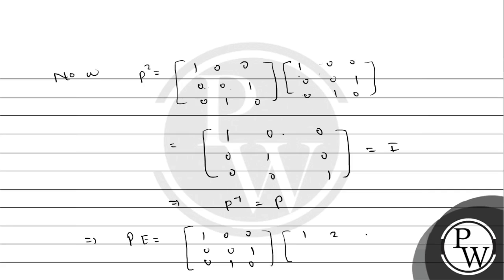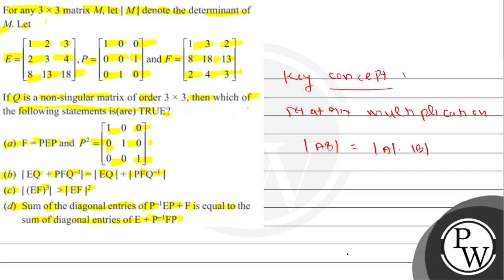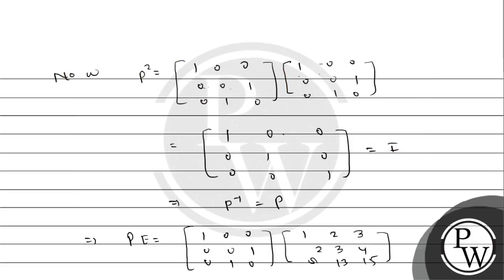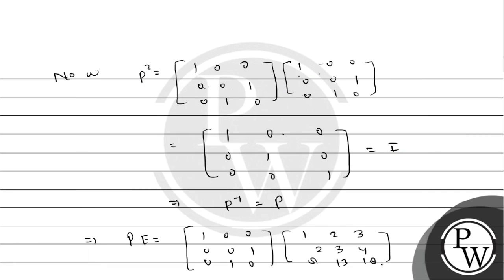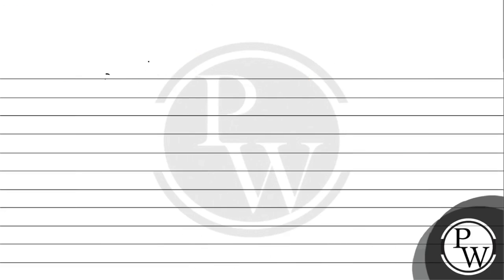The PE matrix multiplied gives entries: first row 1, 2, 3; second row 8, 13, 18; third row 2, 3, 4. We observe this result. Now we multiply the PE matrix further to compute PEP.